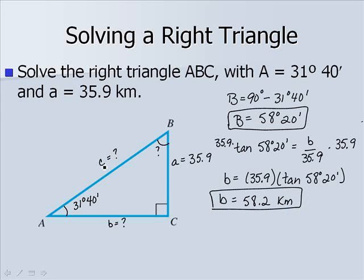And the last side we need to find is side c. You could use the Pythagorean theorem, but I'm going to go ahead and use our angle A. We'll use side a. We have the sine involving the opposite of the hypotenuse of 31 degrees 40 minutes, which would be a, or 35.9, over c.